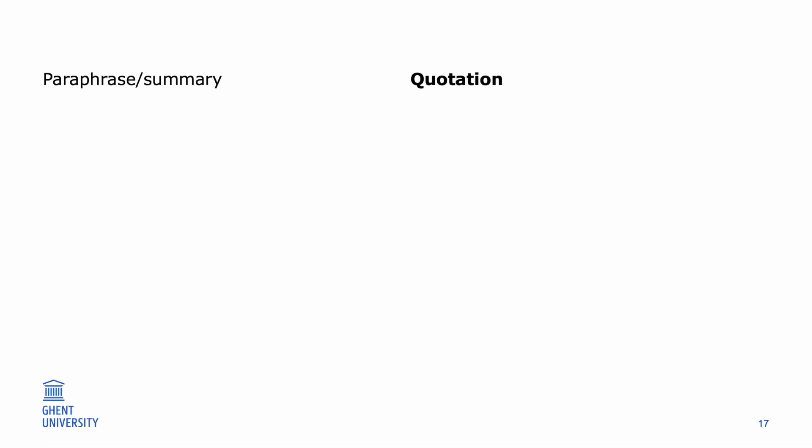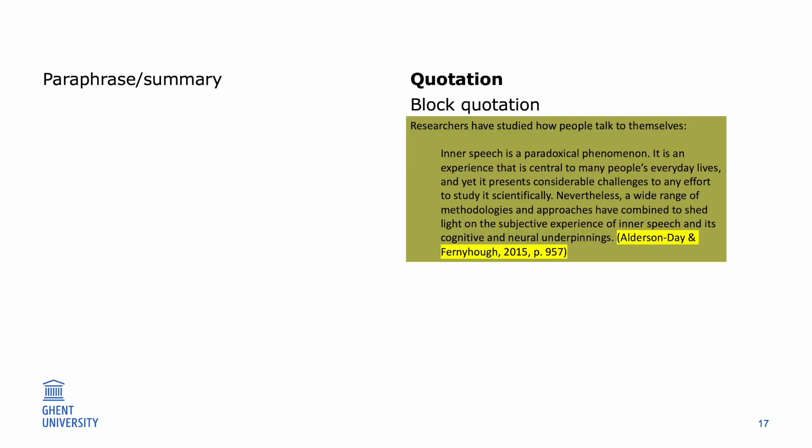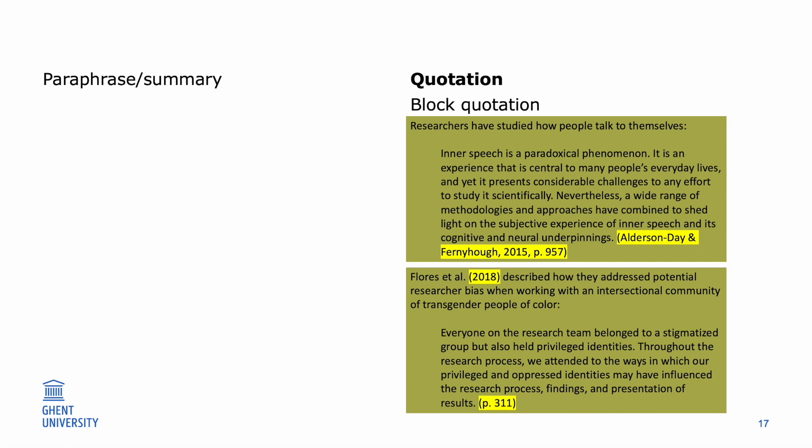When you insert a quote that is 40 words or more, which is called a block quotation, you have two options. You can either use an in-text reference in parentheses after the quotation's final punctuation, or mention the author and year in the sentence before the quotation and place only the page numbers in parentheses after the quotation's final punctuation. Either way, never add a period after the closing parentheses.